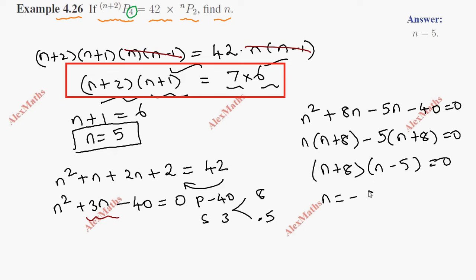So n equals -8 or n equals 5. Since n cannot be negative in permutations, -8 is not possible. Therefore n equals 5.